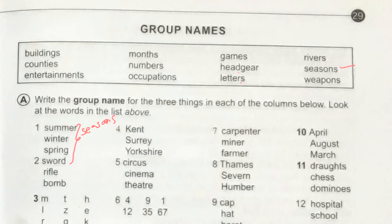Number two: sword, rifle, bomb. What can we write here? Not buildings, not months, not games — weapons! This one we can write here. Number two: these are weapons.